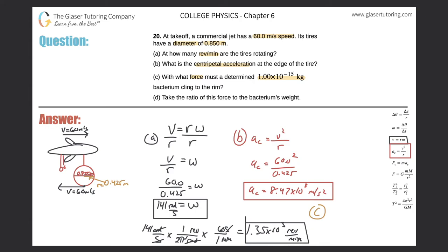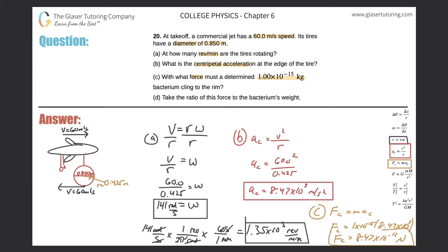The centripetal force formula is F_c = m × a_c. The bacterium's mass is 1×10⁻¹⁵ kg, and the centripetal acceleration is 8.47×10³ m/s². So the centripetal force is 1×10⁻¹⁵ × 8.47×10³ = 8.47×10⁻¹² Newtons. That is the force the bacterium must exert to stay on the wheel.